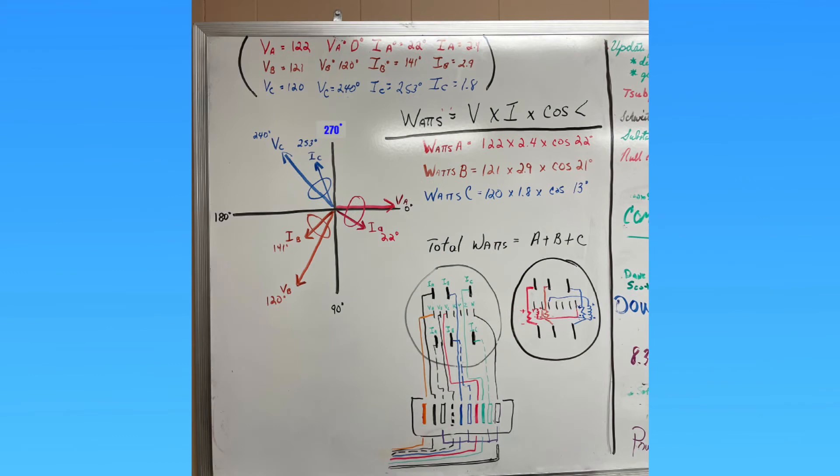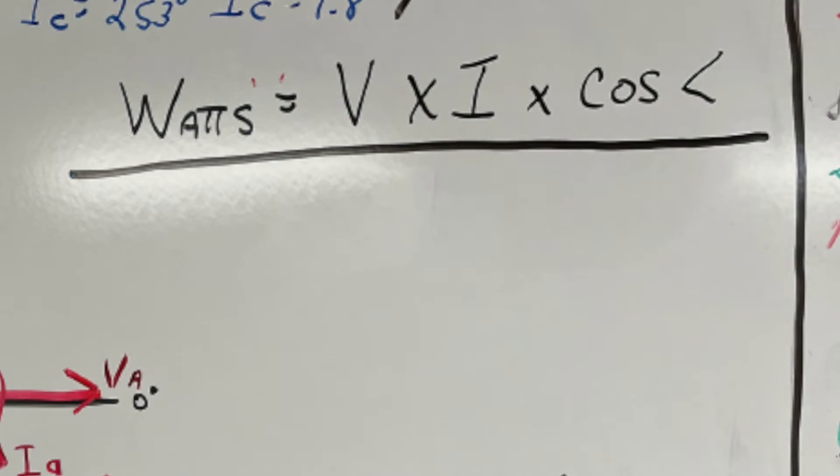Here are some given values at a site that we wrote down on the PowerMaster. Now we're going to go to the watts calculation and the formula for watts is volts times amps times cosine of the angle.